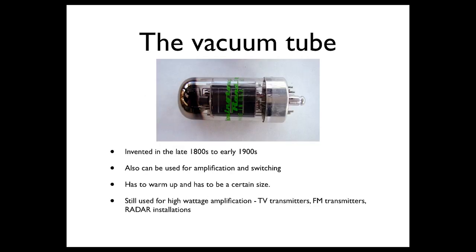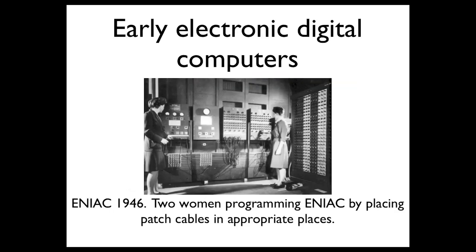Before we had transistors, we had vacuum tubes. Vacuum tubes could do the same things, but they weren't nearly as reliable — they had to get hot. If the vacuum tube was broken or air got into it, it didn't work anymore. They were hard to diagnose, didn't work as well, were bigger, hotter, and less efficient. We still have to use vacuum tubes in certain places today, because transistors can't handle the power needed for things like radar installations or TV transmitters. But transistors have really taken over and they're in everything.